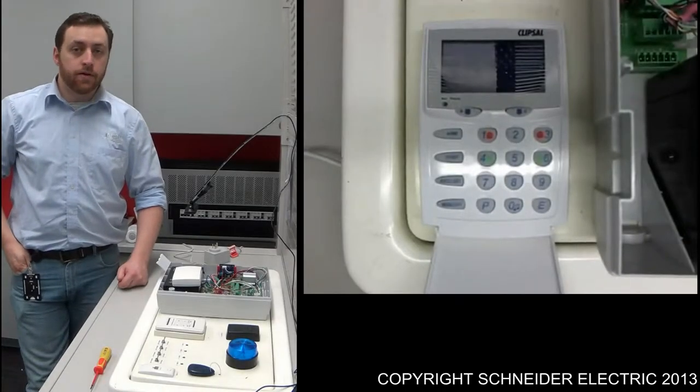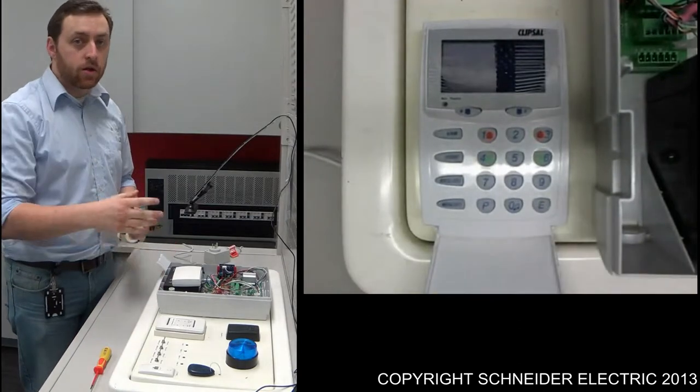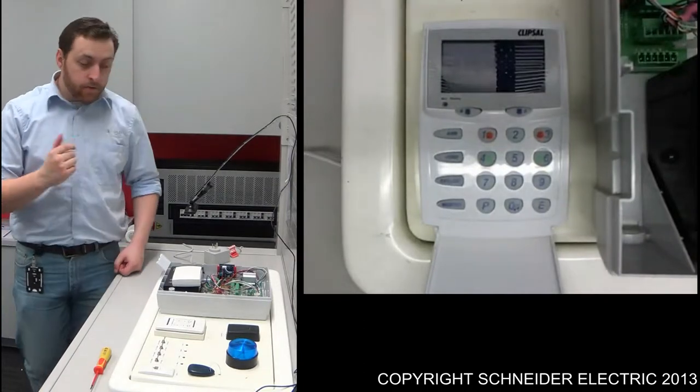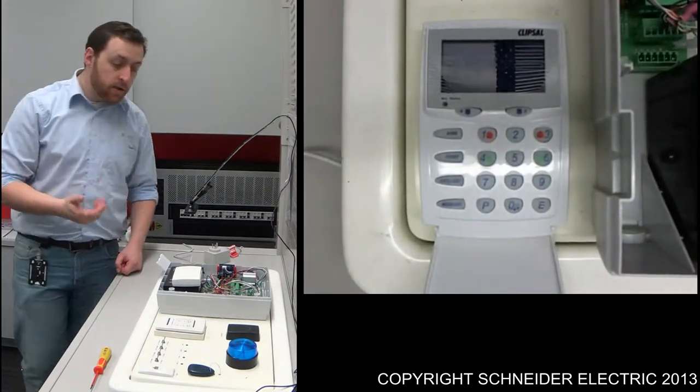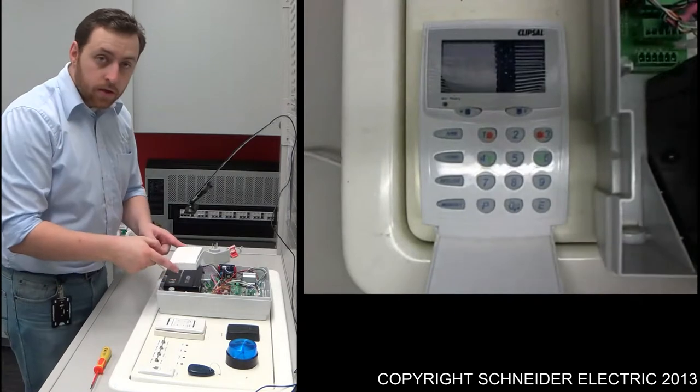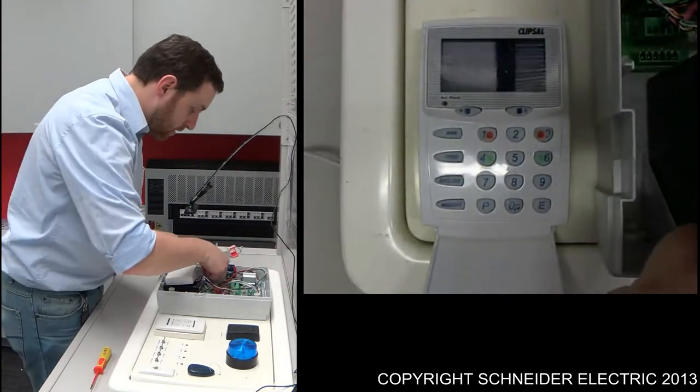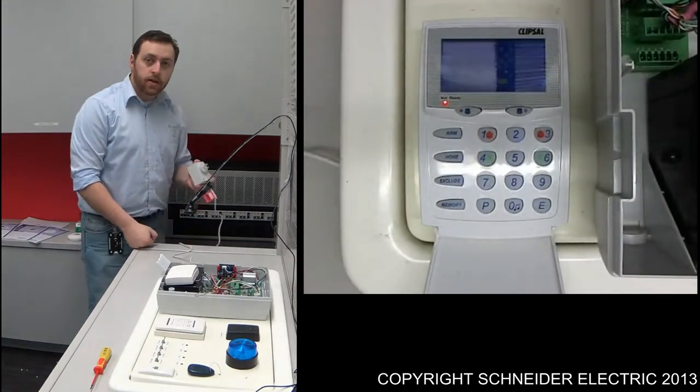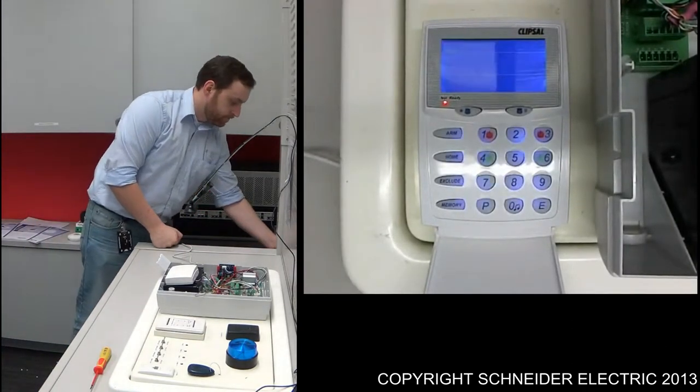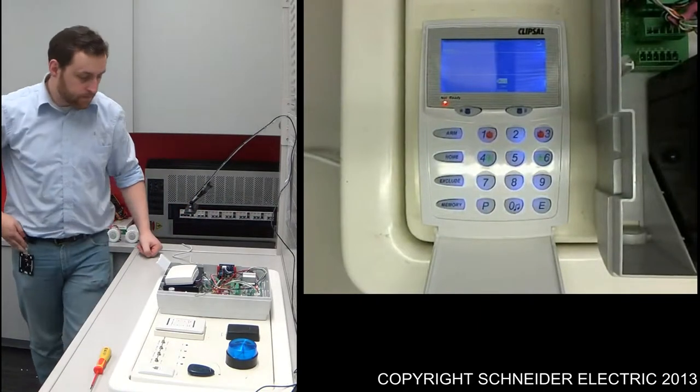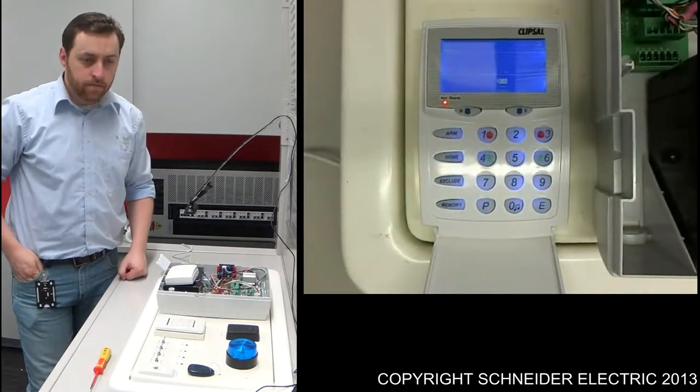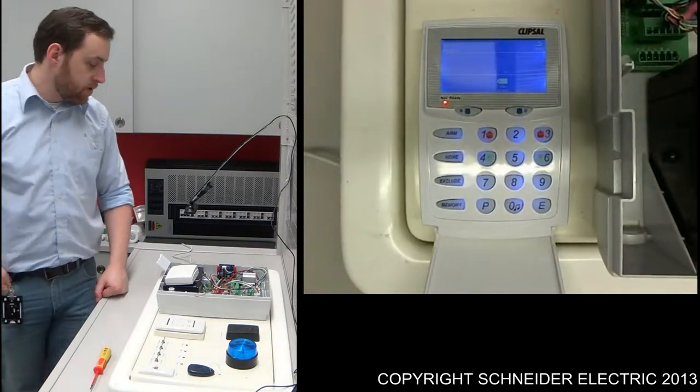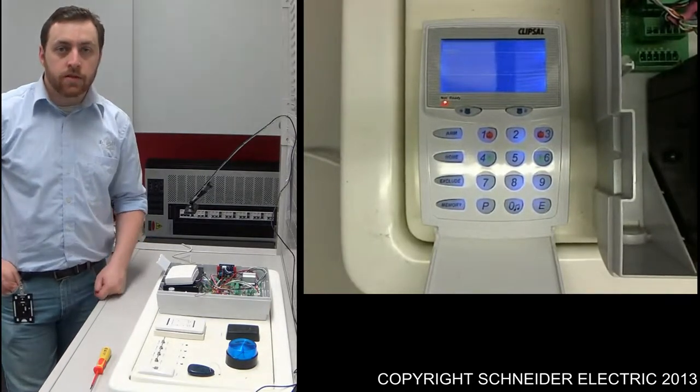I'm going to leave the cover off just so we can get a better feel for what's actually happening with the system. Now the first thing I'm going to do is power the system up. Now that the RF module is installed, I'm going to connect the battery as well as connect it to mains power. Just for now, just ignore the battery light, that was just something that came across from the previous exercise.